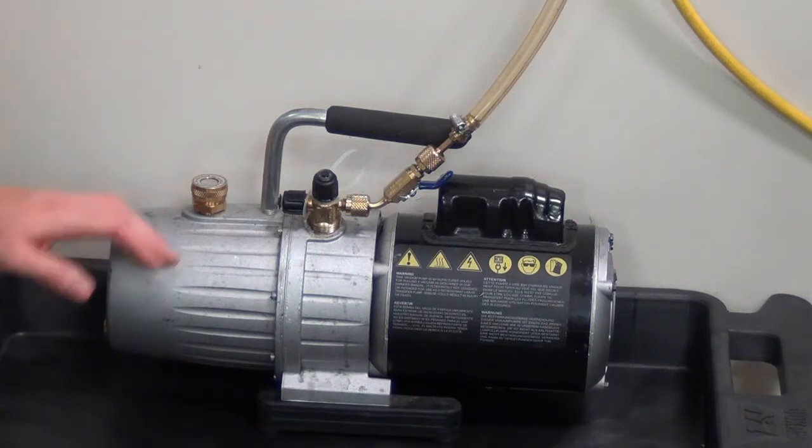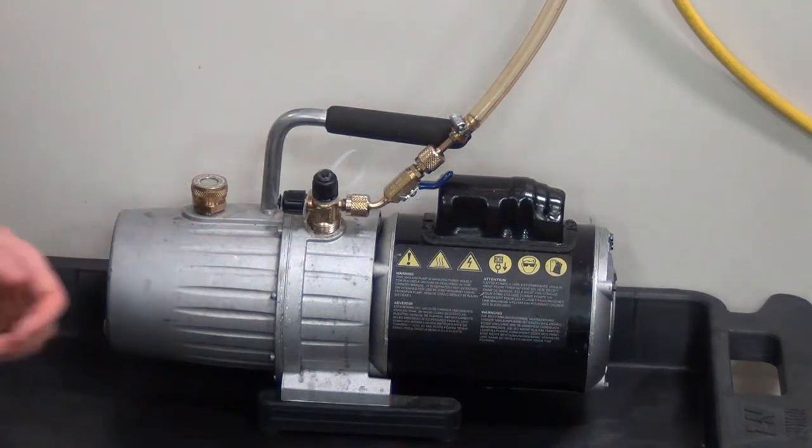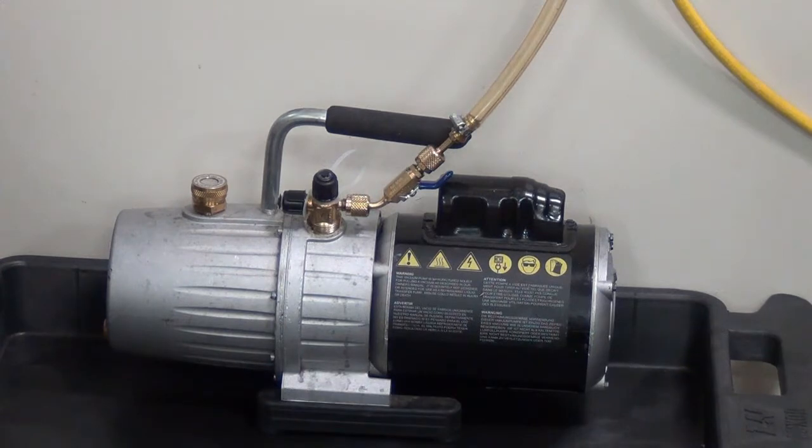When the pump is connected to a system that is in a vacuum and it is not running, it is possible for the oil inside the vacuum pump to migrate out of the pump and into the system, filling hoses, manifolds, or other gauges connected to the system with vacuum pump oil.